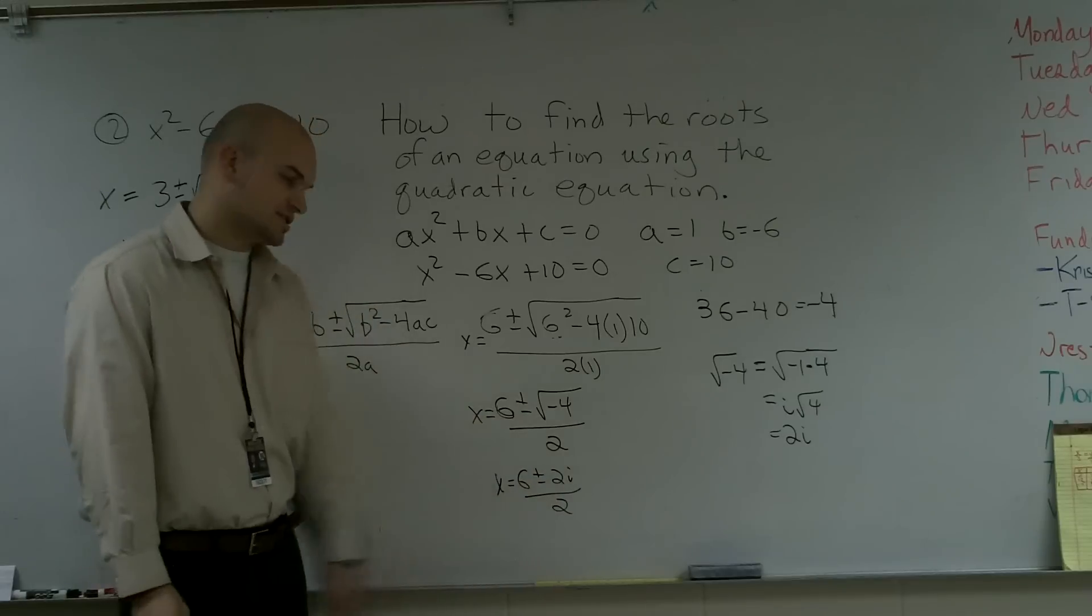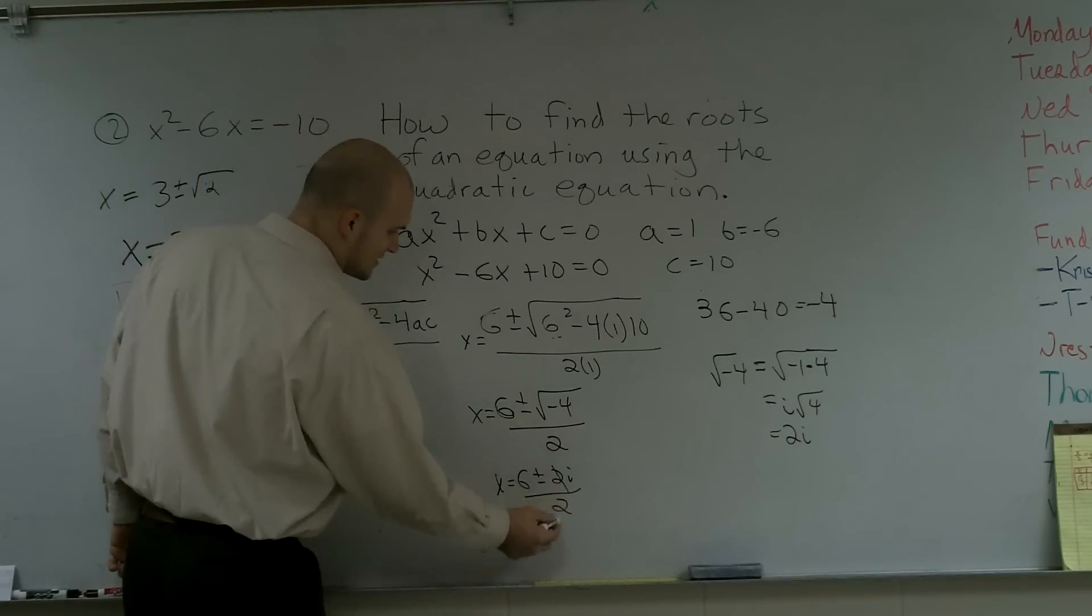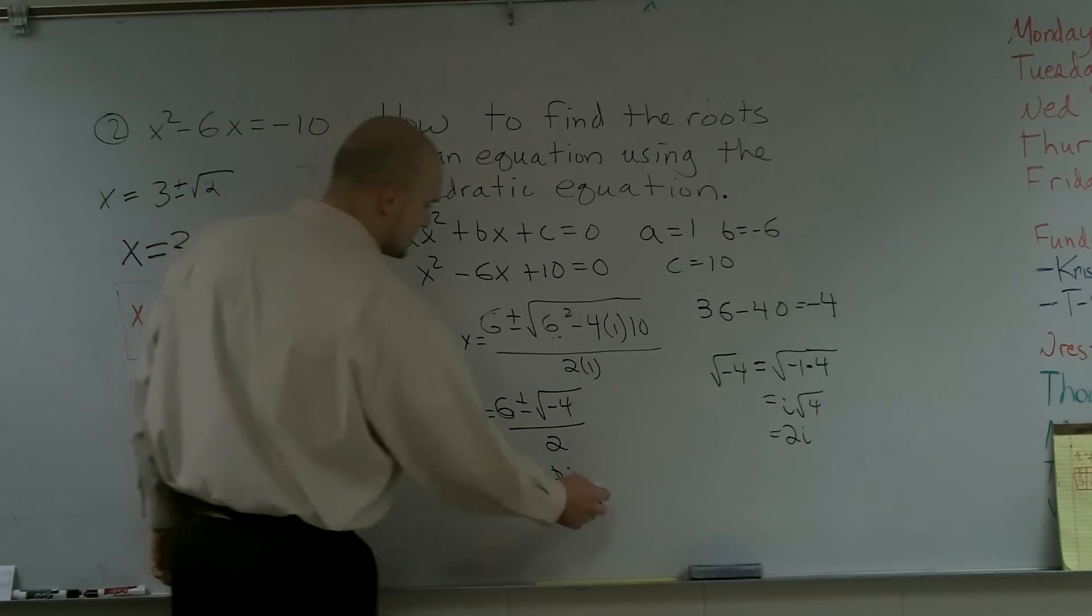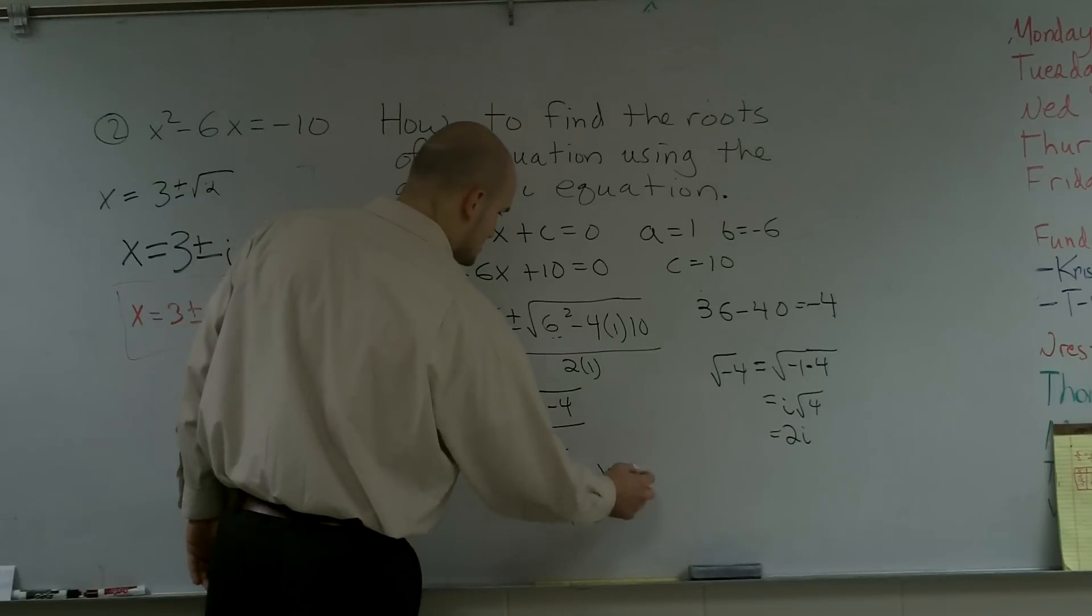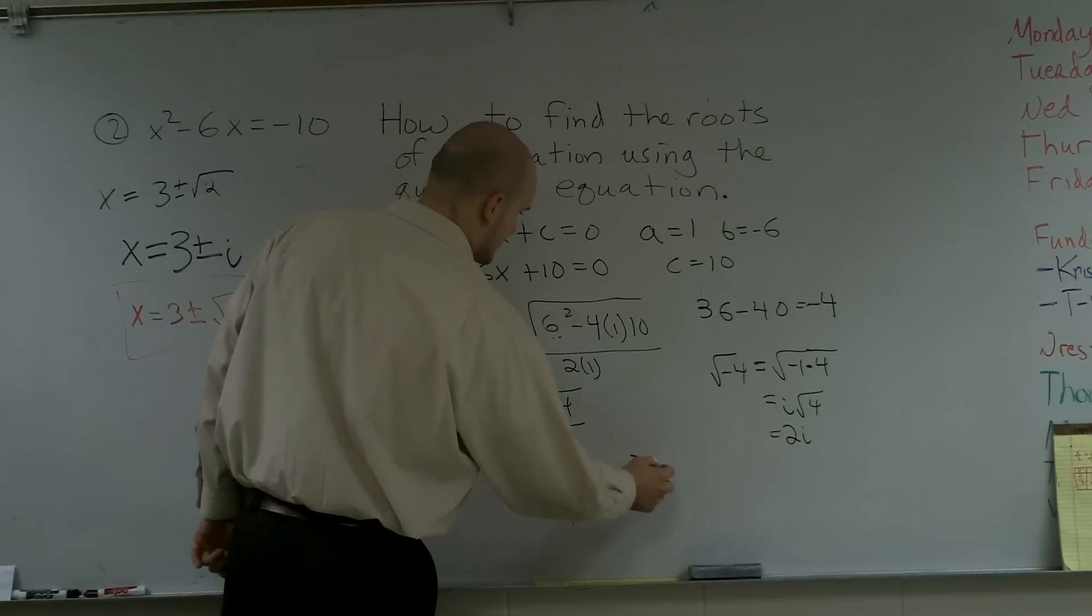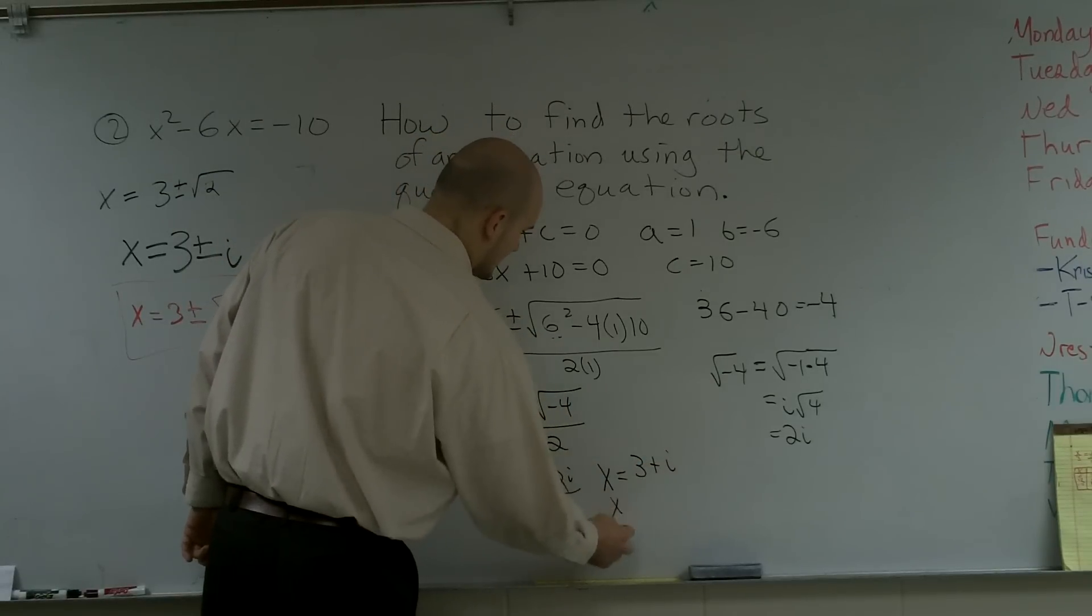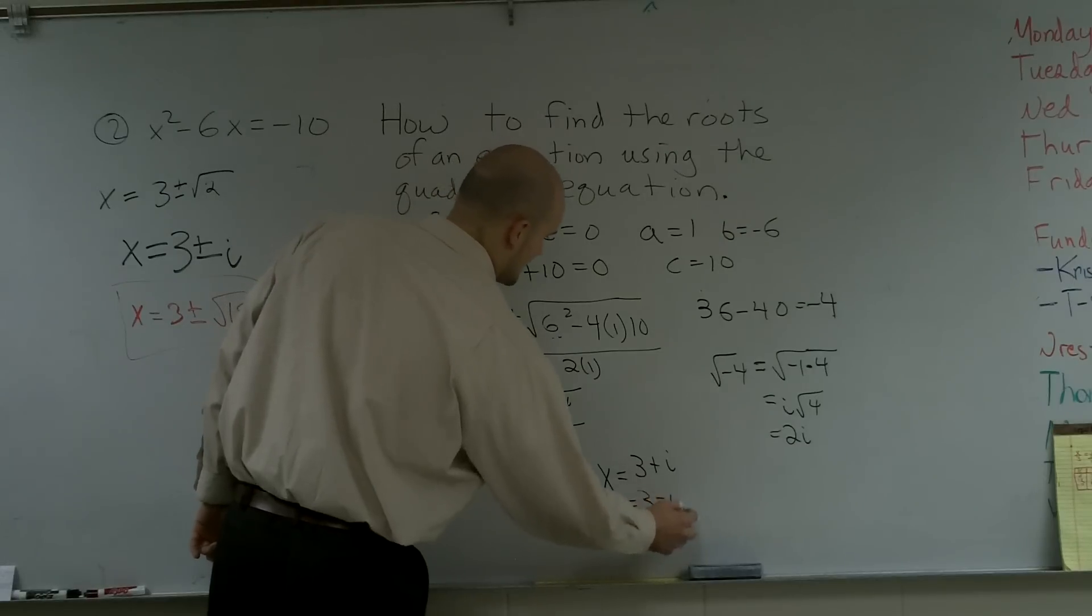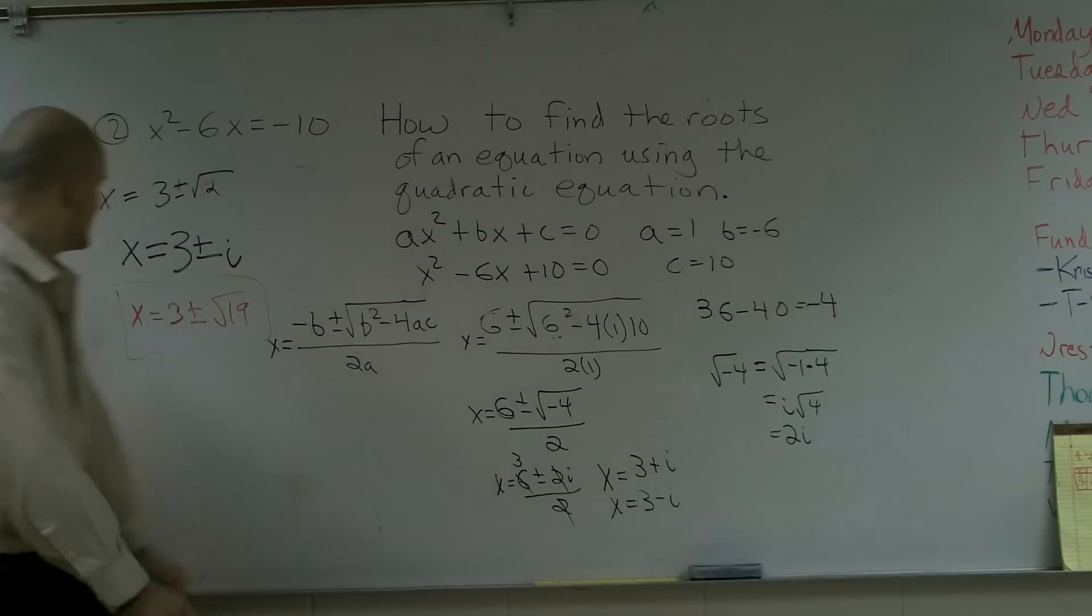Now, I notice that these all share a 2, so I can factor out a 2. So, factor out a 2, take out a 2, take out a 2, I'm left with 3. So, now x equals 3 plus i and x equals 3 minus i. Because those 2's cancel out and I factor out 3.